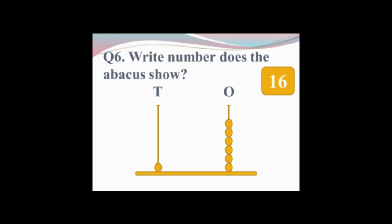Read question number 6: what number does the abacus show? Write in the box. First, count the beads on the ones rod: 1, 2, 3, 4, 5, 6. And on the tens rod there is 1. So 1 and 6 makes 16. What is the number? 16.